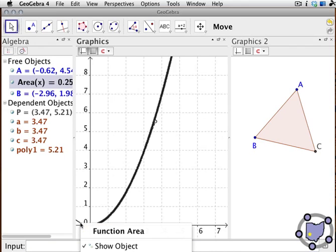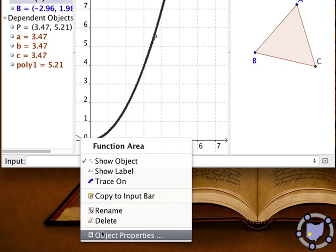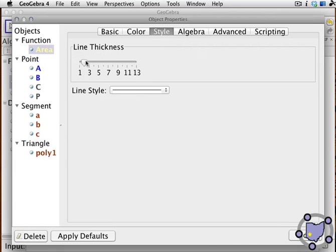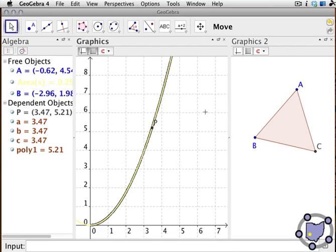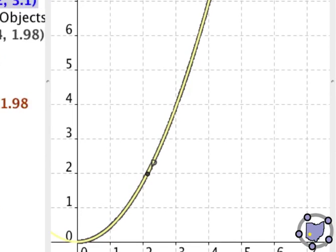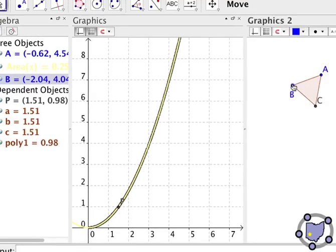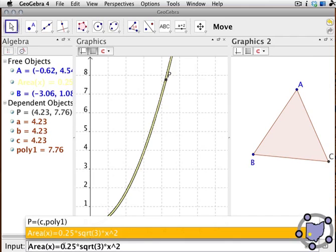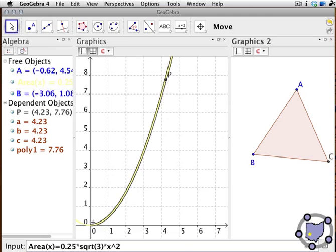And to accentuate this a little bit better, let's right click on that function and change its color so it's easier to see. How about we'll pick kind of a yellow color. Make it sort of thick. Now as I drag points around, notice that point P is going right over top of that yellow plot. So this leads me to believe that this function right here describes the area of this triangle with respect to the length of one of the sides. It's not proof, but it's compelling evidence.